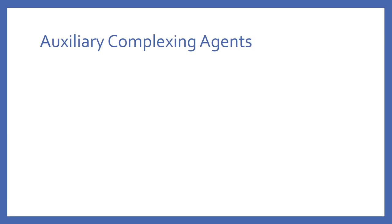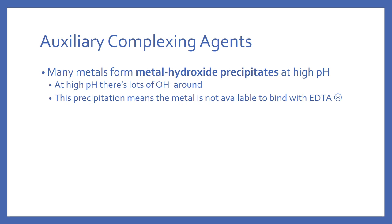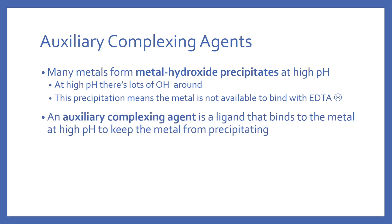Your titration might need an auxiliary complexing agent. The problem is that at high pH — where we want lots of Y4- — many metals form precipitates with hydroxide. When your metal is precipitated, it's not available to bind with EDTA and you won't measure all of your metal. The auxiliary complexing agent is a ligand you add in that binds the metal loosely and temporarily to keep it from precipitating with hydroxide.